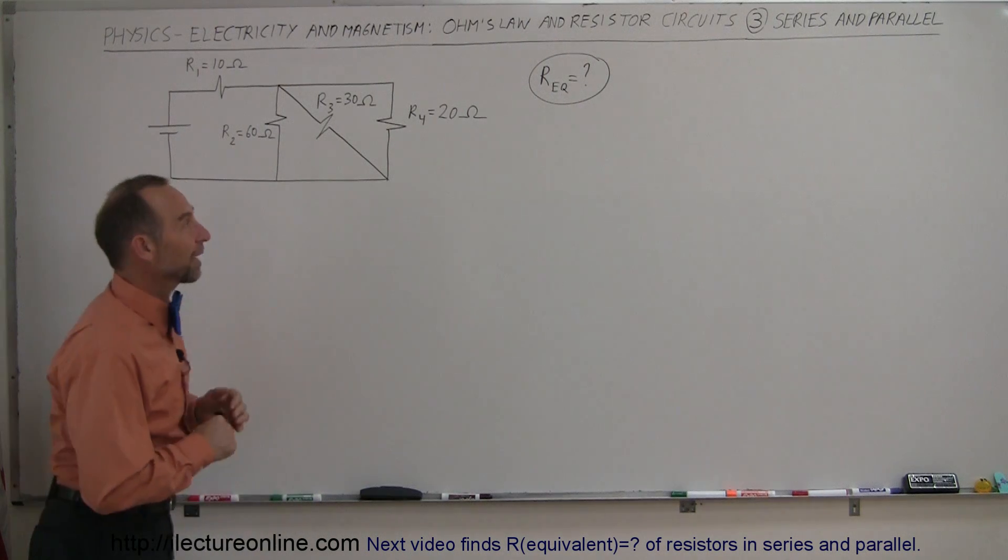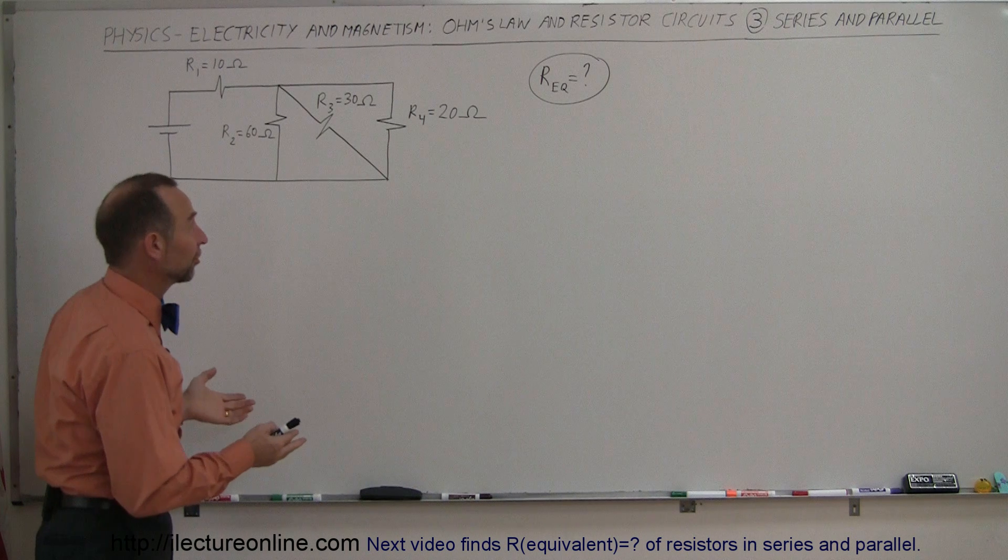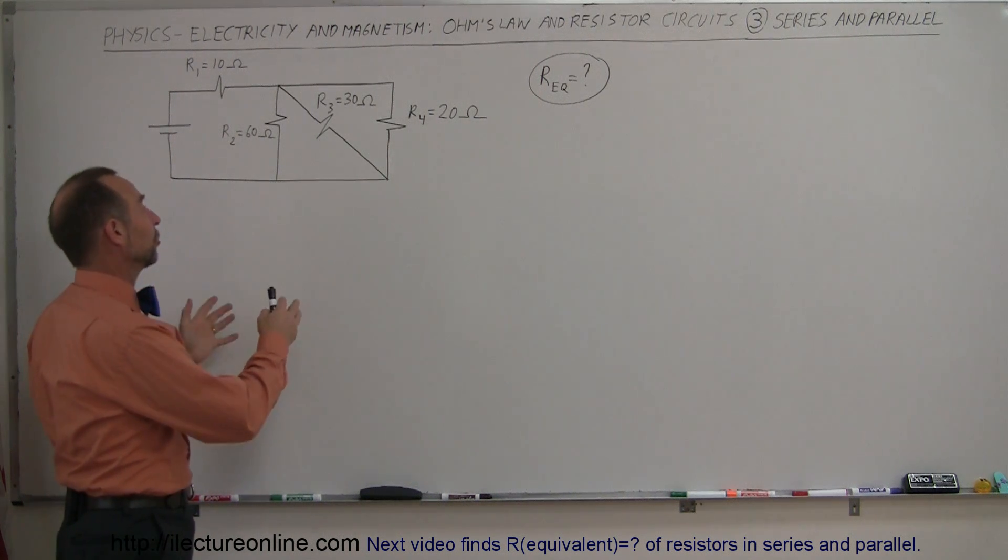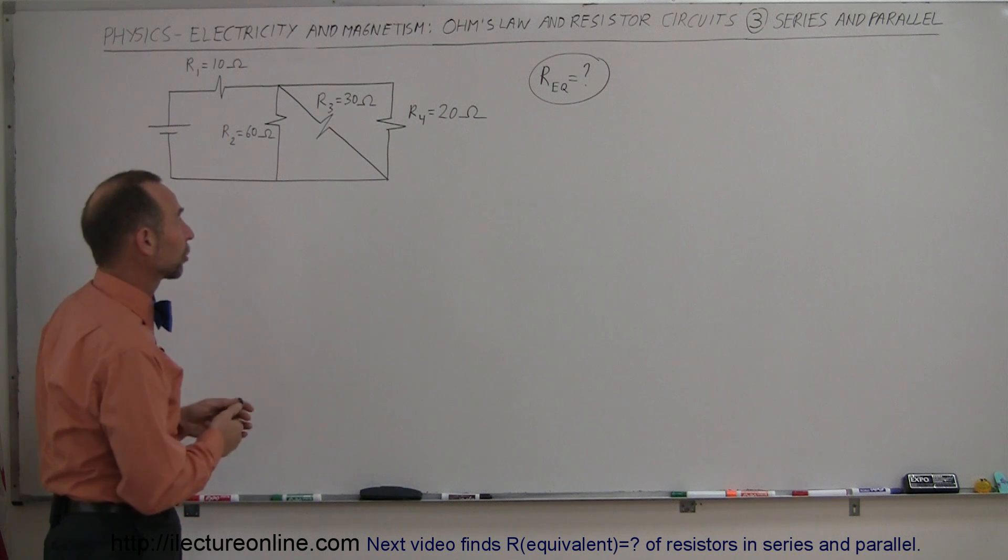Welcome to Electron Online, and here we have our third example of how to take an electrical circuit with resistors and reduce it to its equivalent resistance so it would be really easy to find the total current in the circuit.